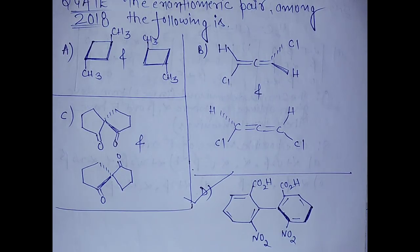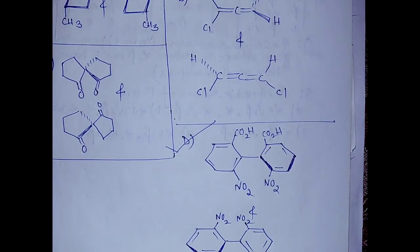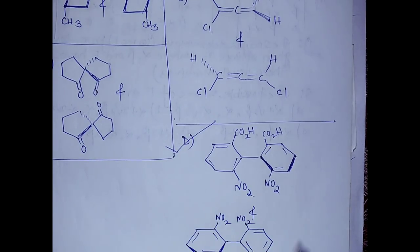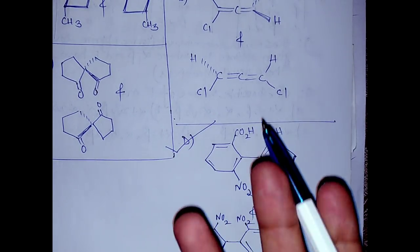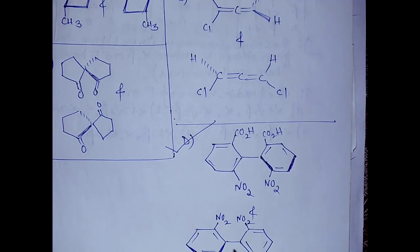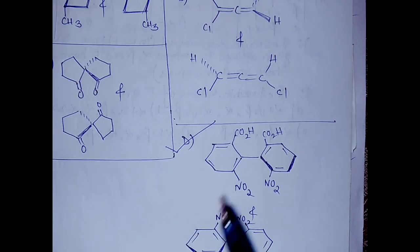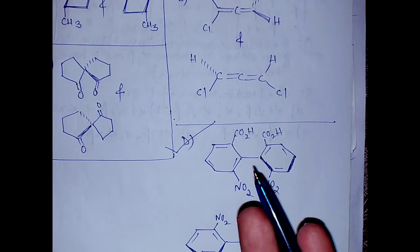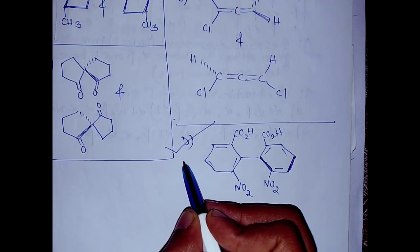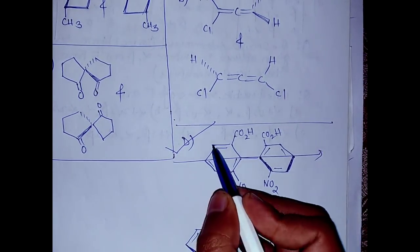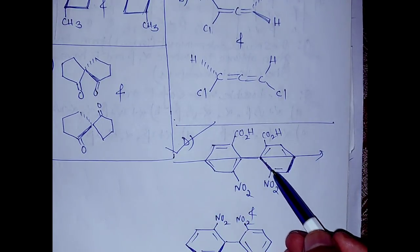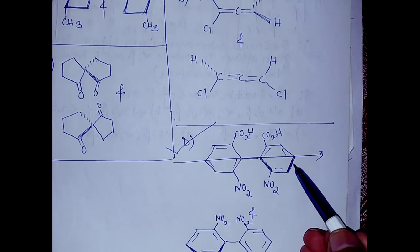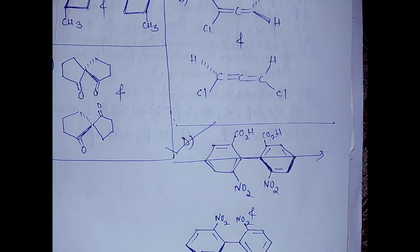D was the answer, and in that video I told you that you have to pass the axis. First, calculate the RS configuration — if you get R at one end and S at the other, that is your answer. Pass the axis from the planar side. This is the planar side because this part is shaded, meaning it is above the plane.